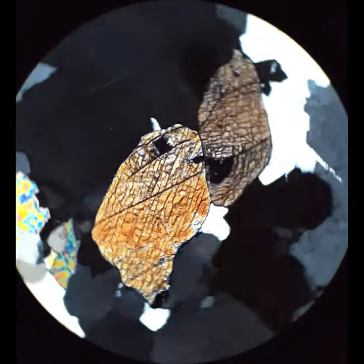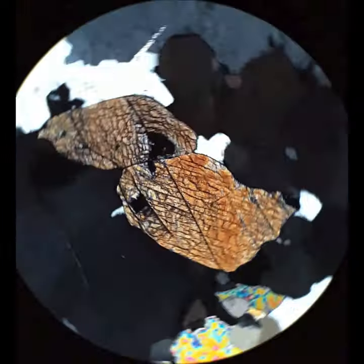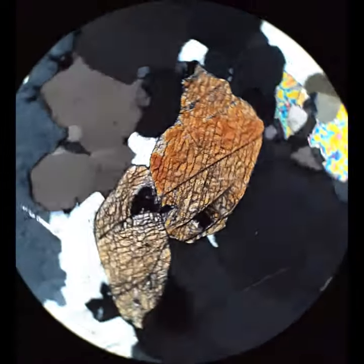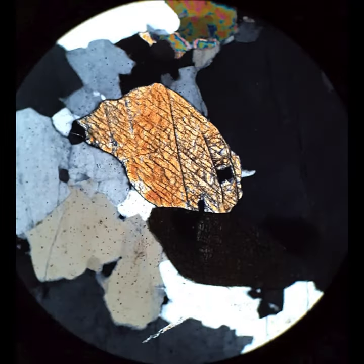You're looking down the C-axis. And in that orientation, the interference colors are really low. So this is typical sort of yellowy-orange when you see those two cleavages.